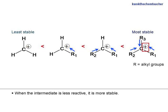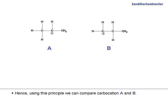When the intermediate is less reactive, it is more stable. Hence, using this principle, we can compare carbocation A and B.